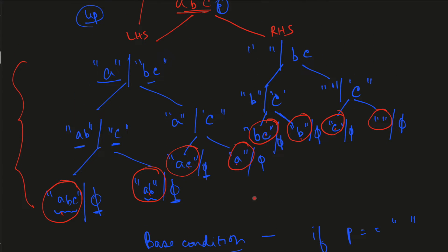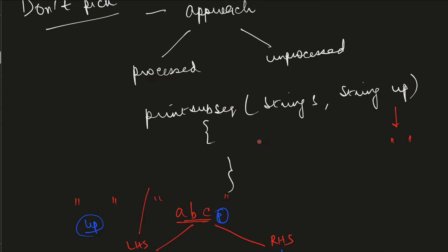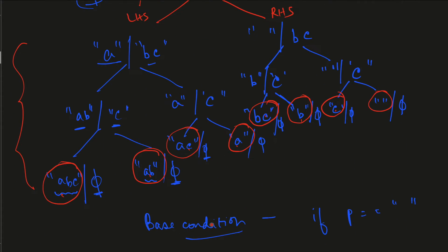This is how, using a recursion tree, we understand how subsequences are generated using the pick and don't pick concept. The code implementation of that we will see in a moment. This is also the base case as discussed. There is another flavor of the question where instead of printing the subsequences you store them in a data structure like a list and return the count — that is, how many subsequences were generated.